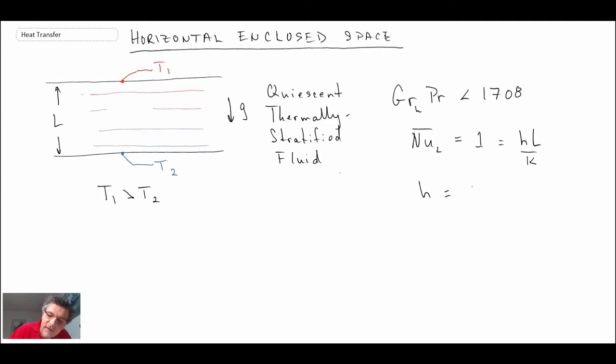If we remember h*L over k, what that is telling us is that h is just equal to k over L. If we recall Fourier's law, we had h times (T1 minus T2). Plugging in the h value we get k/L times (T1 minus T2). That looks very much like Fourier's law—we had k*dT/dx. We have T1 minus T2 divided by L, so that would be the gradient of the temperature.